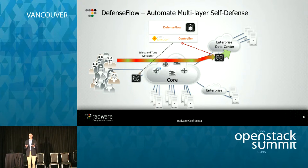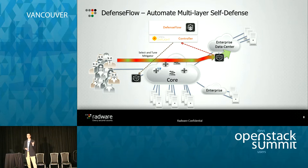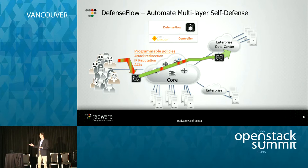Our Defense Flow application on top of OpenDaylight looks at those parameters and determines the best place in the network to block the attack. Let's say it's at a scrubbing center somewhere in a different geographical location. It takes the telemetry, the information, and specifically the signature required to block that attack, pushes that signature down to the scrubbing center, and then uses OpenFlow routers to redirect the attack. The redirected flow is then sent through the scrubbing center, cleaned there, and sent on to the enterprise data customer.